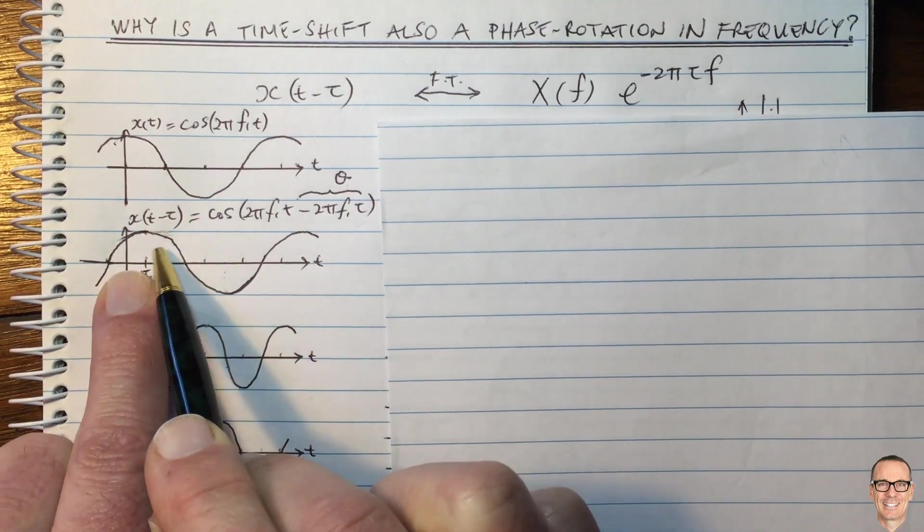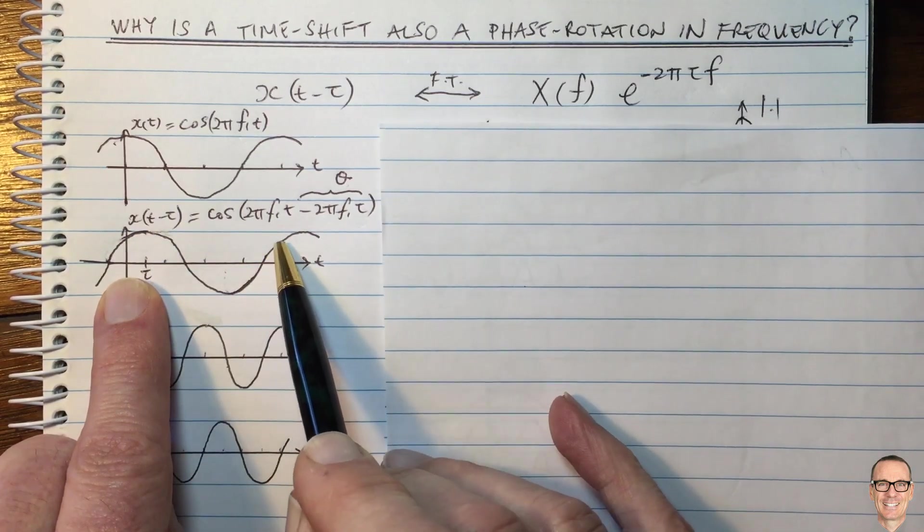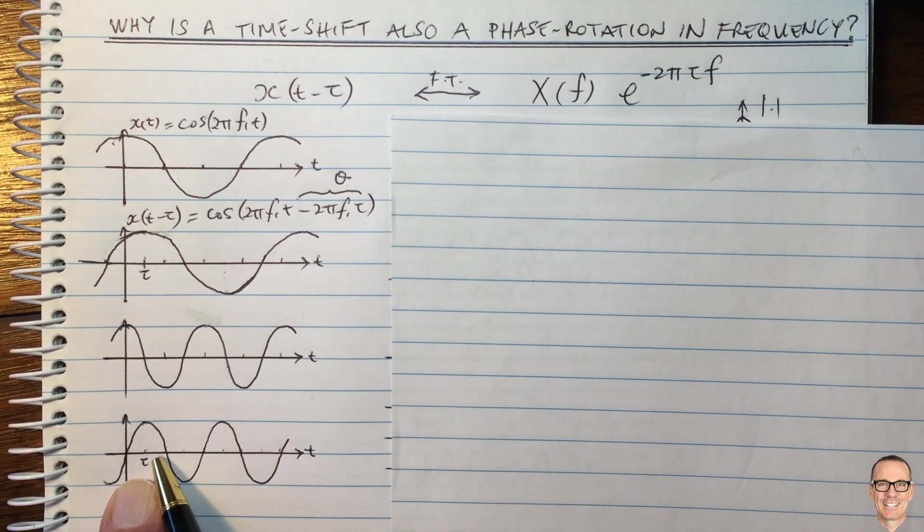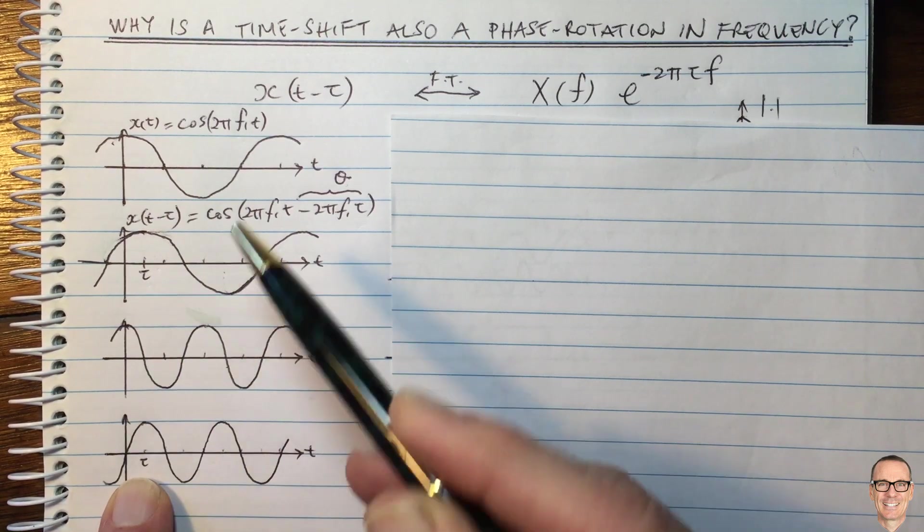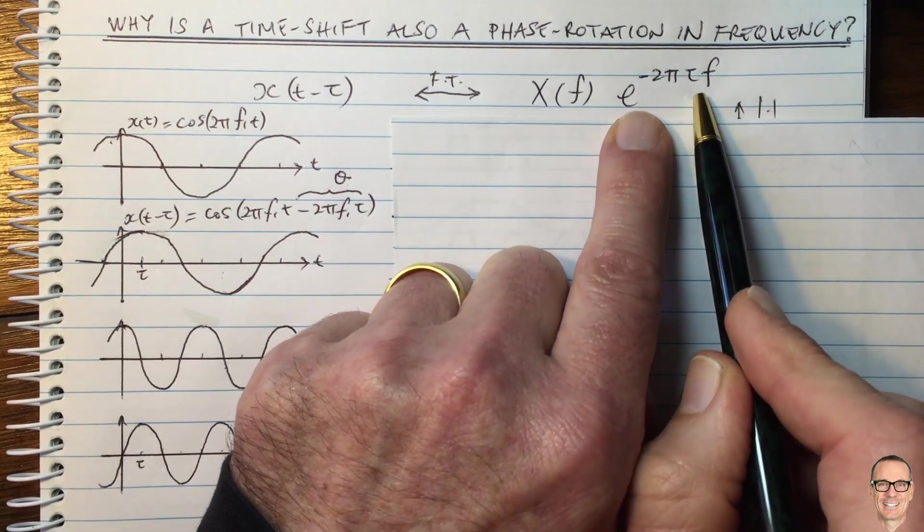Whereas up here, the phase shift was a smaller percentage of the wavelength. And so the phase shift here was only one eighth. Whereas here, it's a quarter the way I've drawn it. So the higher the frequency, the more the phase shift. Again, this matches up with this equation.